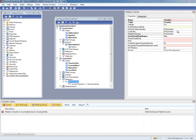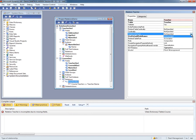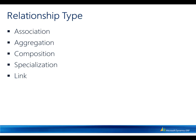The next property that we are going to take a look at is the relationship type. There are five different values that can be set for the relationship type property. We are going to take a look at association, aggregation, and composition in more detail in a little bit. When two tables participate in an inheritance hierarchy, then on the child table or the derived table, the relationship type is specialization. Link is how we specify self-relations.